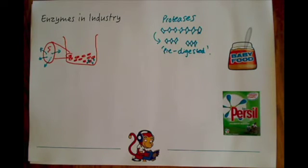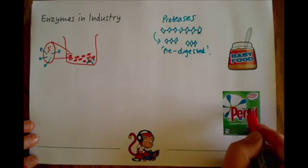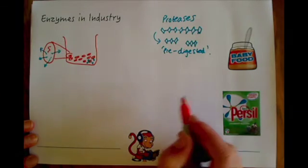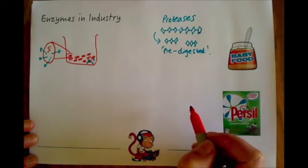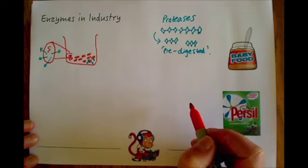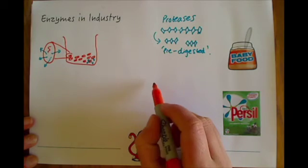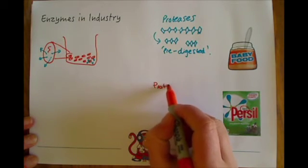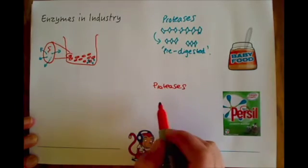Another one where they're useful is in biological detergents. You've probably seen and heard of biological detergents before but not realized what makes them bio. The bio bit is actually because they've got enzymes in them, and the enzymes that are in these biological detergents are things like proteases again and lipases.